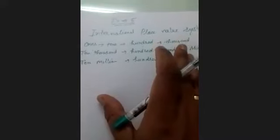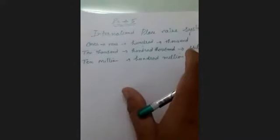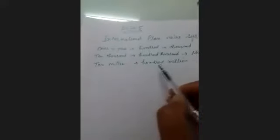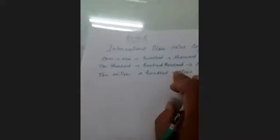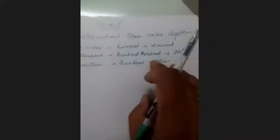In the international place value system, we do not have lakhs or crores. Instead we use hundred thousands, millions, ten millions, and hundred millions. These are the place values according to the international place value system.